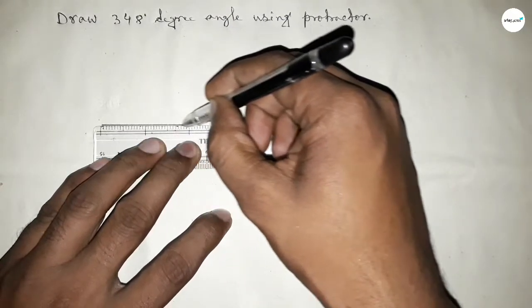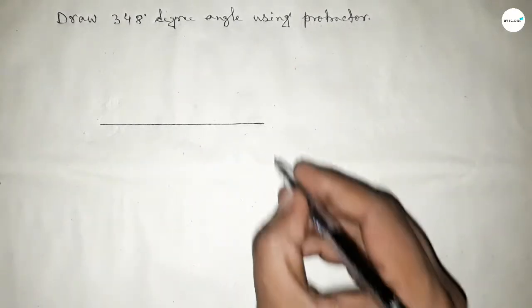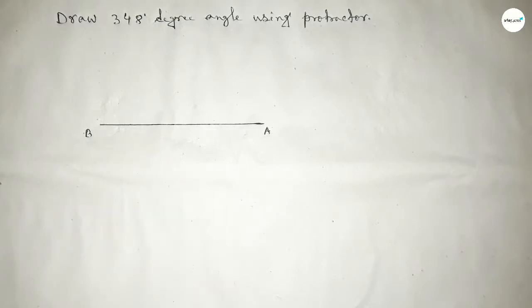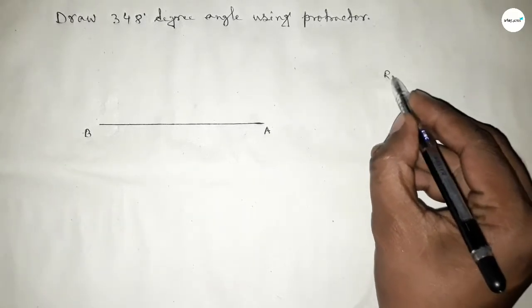Drawing here a line and taking this as point A and here point B. Now drawing here some workspace.